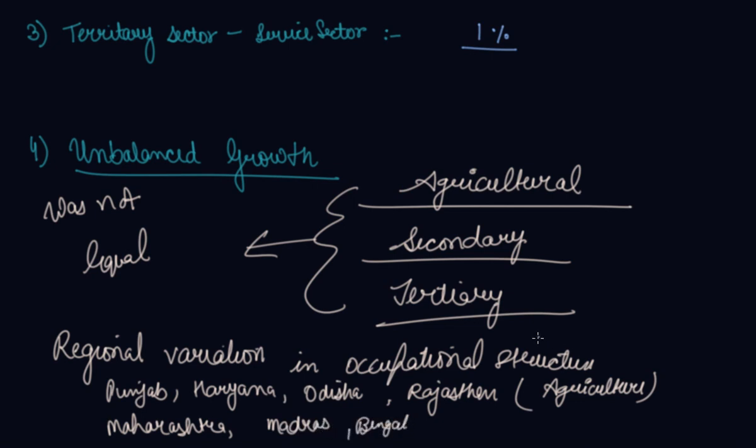Whereas Maharashtra, Madras, and Bengal had started with the secondary and tertiary sectors. There was a small shift from the primary sector to the secondary and tertiary sectors, as they were emerging sectors of industrialization and trade.